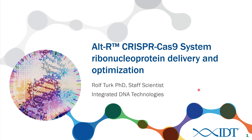Rolf is a staff scientist here in the Molecular and Genetics Applied Research Group at IDT, where he's been working on a variety of projects, including the optimization of delivery protocols for oligonucleotides, protein, and the CRISPR-Cas9 system components. Dr. Turk received his PhD in Molecular Genetics from the University of Leiden in the Netherlands, where he studied disease mechanisms underlying muscular dystrophy using high-throughput methodologies. Rolf's presentation today should last about 45 minutes, and following the presentation, Rolf will answer your questions.